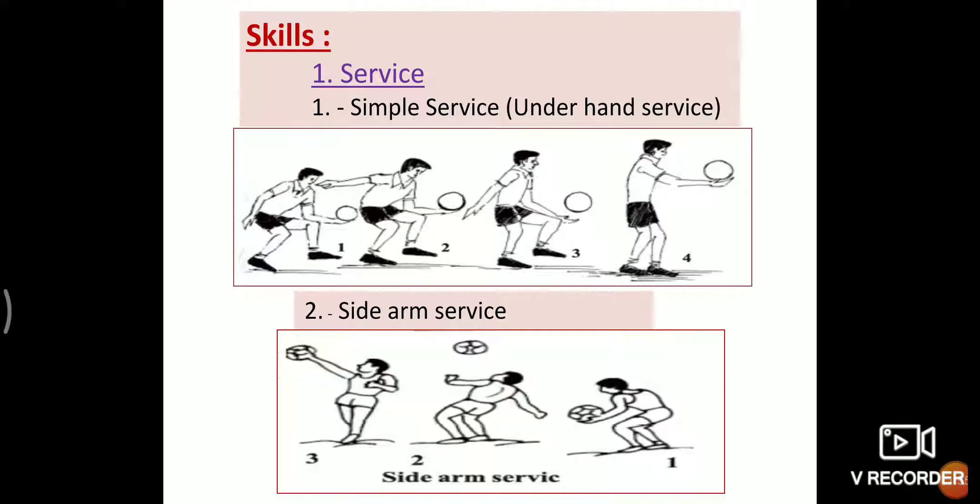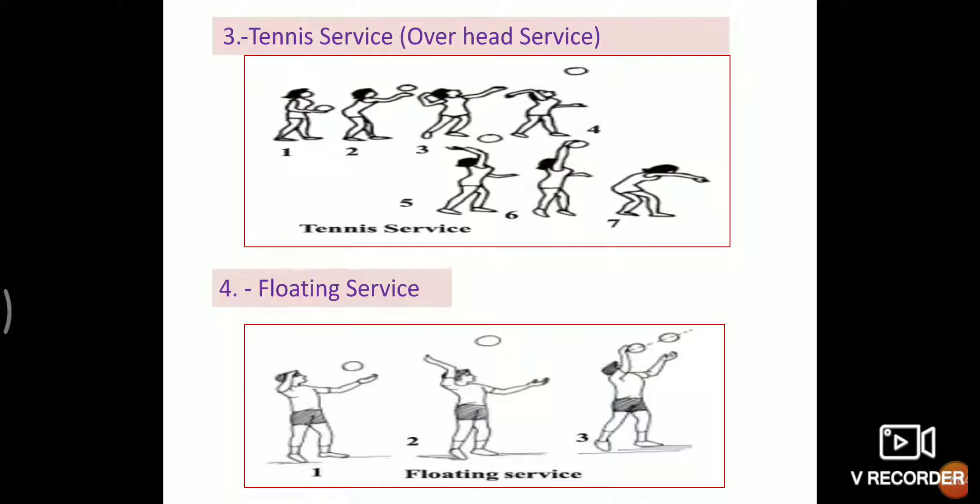Third, tennis service or overhead service. Right handed player tosses the ball higher than the level of his head by left hand. Then he extends his right hand upward and behind the head, and as the ball comes down to his head level, he quickly smashes with the right hand forward and with the palm of his right hand sends it over the net to the opposite side.